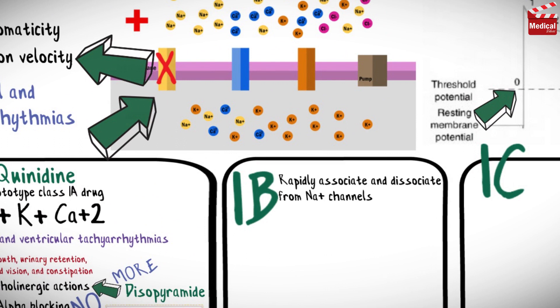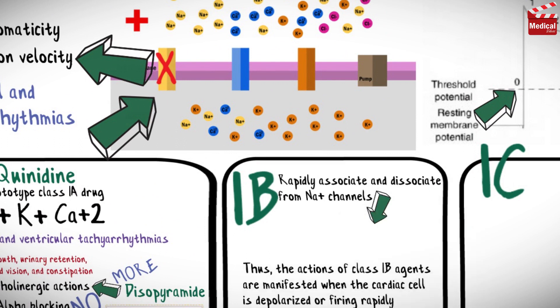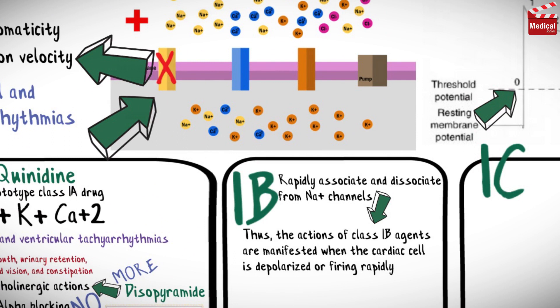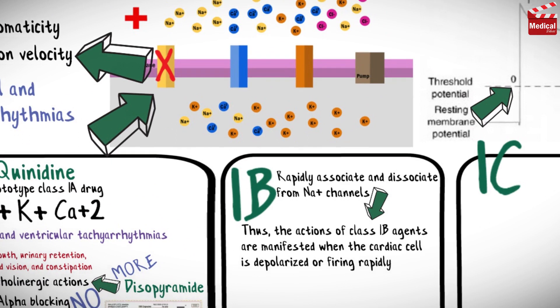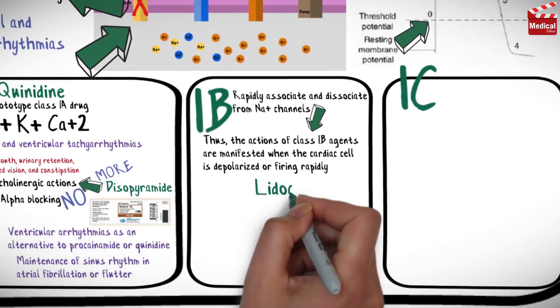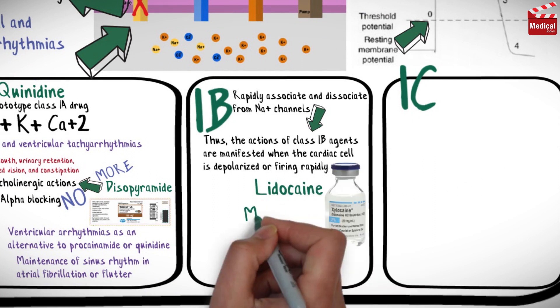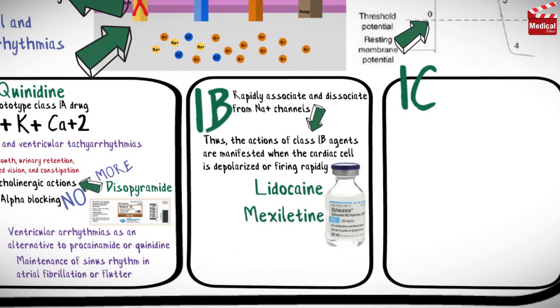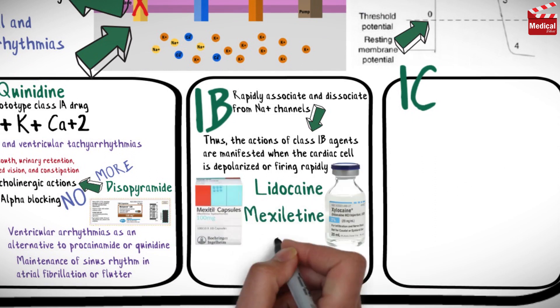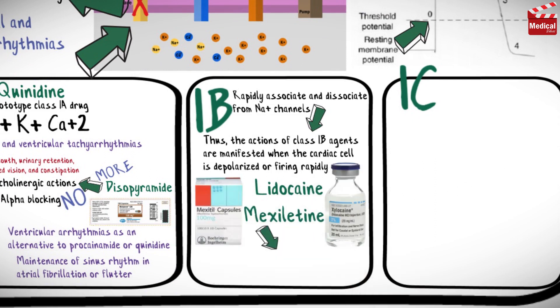Class 1b drugs rapidly associate and dissociate from sodium channels, so their actions are manifested when the cardiac cell is depolarized or firing rapidly. This class includes lidocaine and mexiletine, and they are useful in treating ventricular arrhythmias.